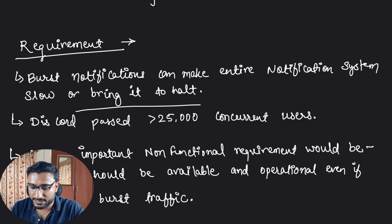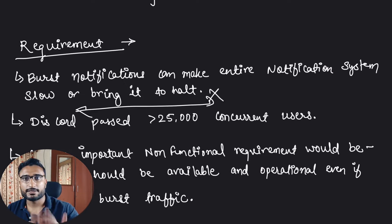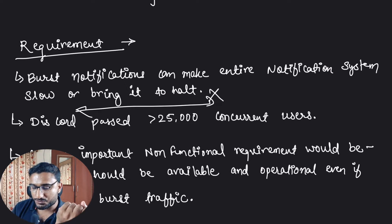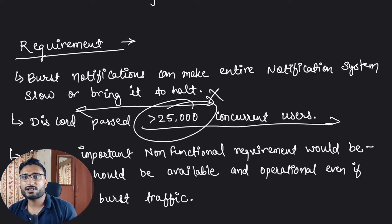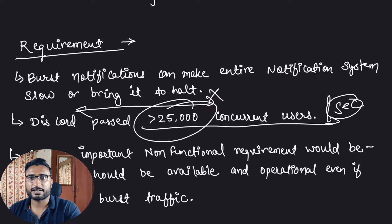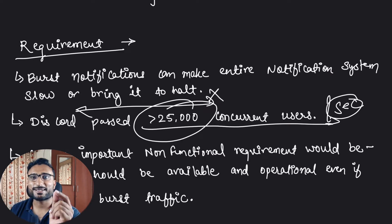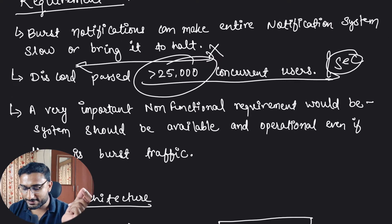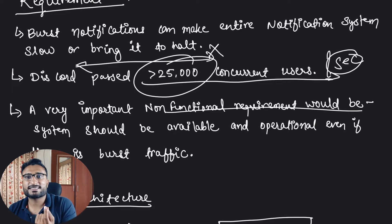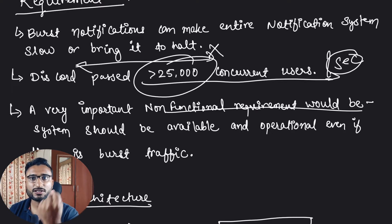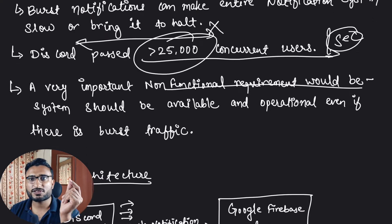Our entire notification system should not slow down and come to a halt. The notifications will be coming in burst and our system should remain functional — this is the most important requirement. We are looking at millions of notifications per minute. This is the most important non-functional requirement we are looking at.